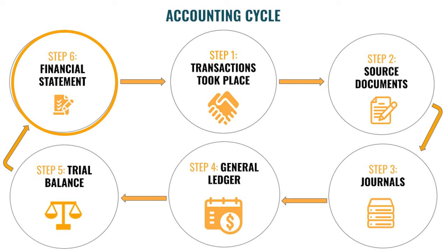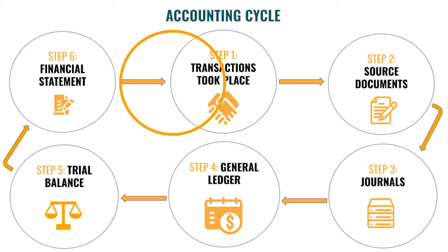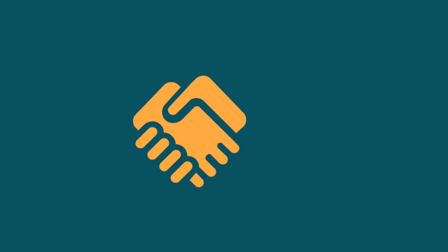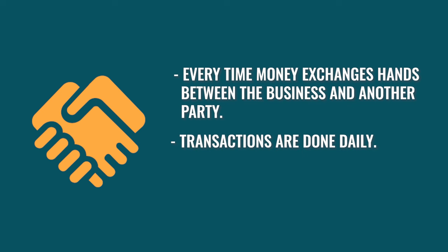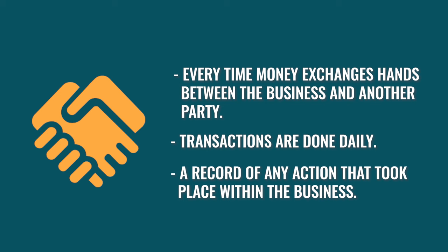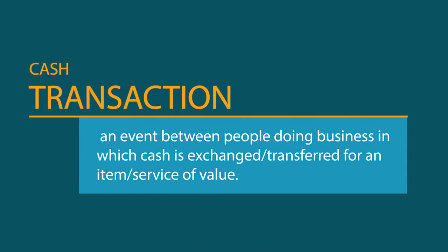Let's look at these steps a bit closer. Firstly, the transactions take place. A transaction takes place every time money exchanges hands between a business and another party. Transactions are done daily. It is a record of any transaction that took place within a business. A cash transaction is an event between people doing business in which cash is exchanged or transferred for an item or service of value.